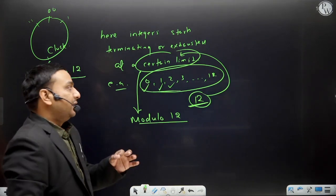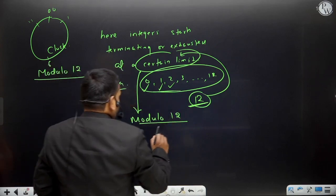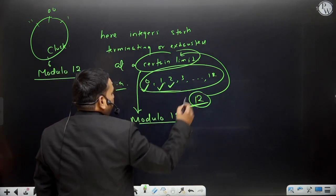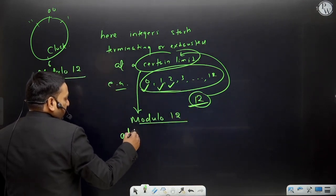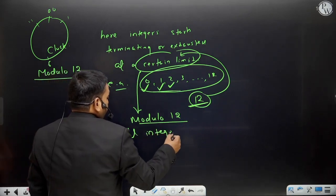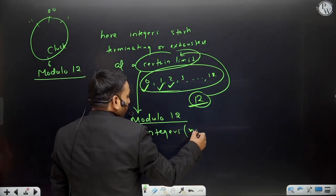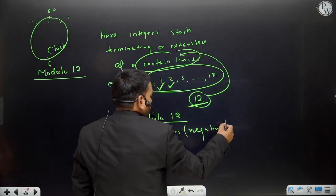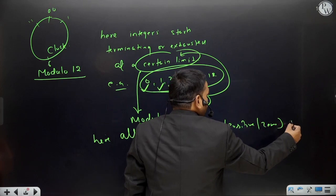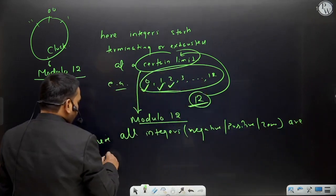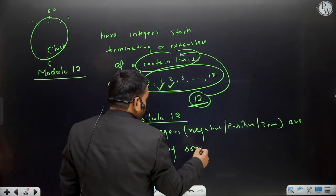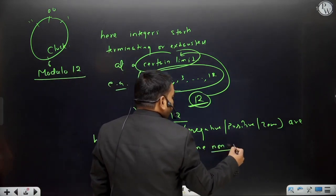So when we talk about modulo - in modulo 12, all the integers will be represented by some number. So here, all integers - negative, positive, zero, whatever you take - are represented by some non-negative integer.